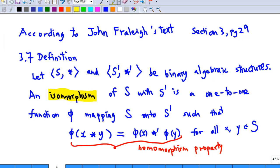If we have x star and x prime star prime, the binary algebra structures, an isomorphism of x with x prime is a one-to-one function mapping x onto x prime such that phi of x star y must be equal to phi of x star prime phi of y. The last property is called the homomorphism property.